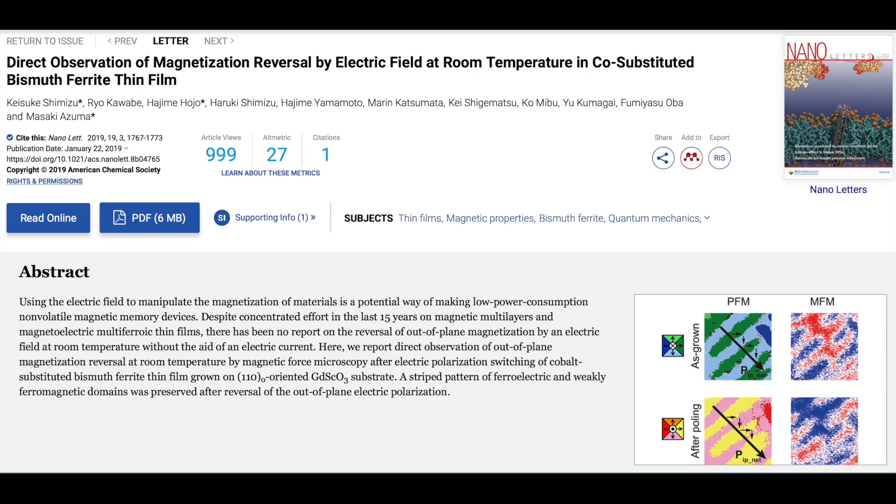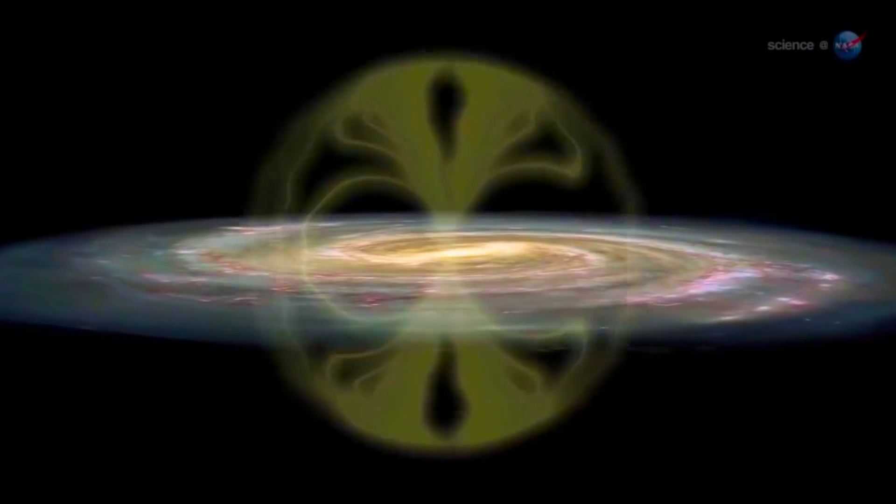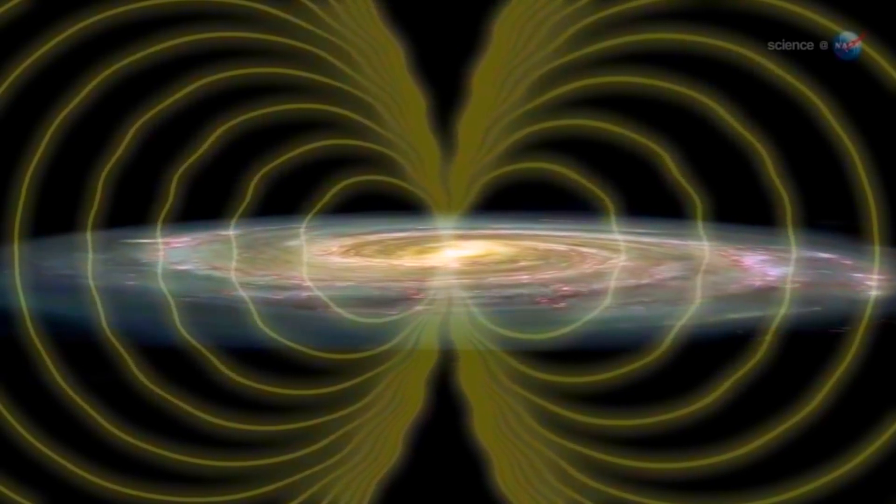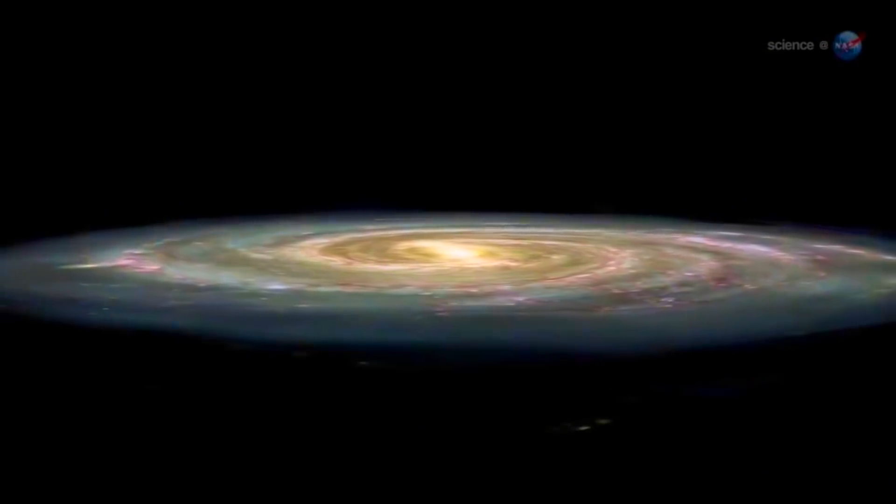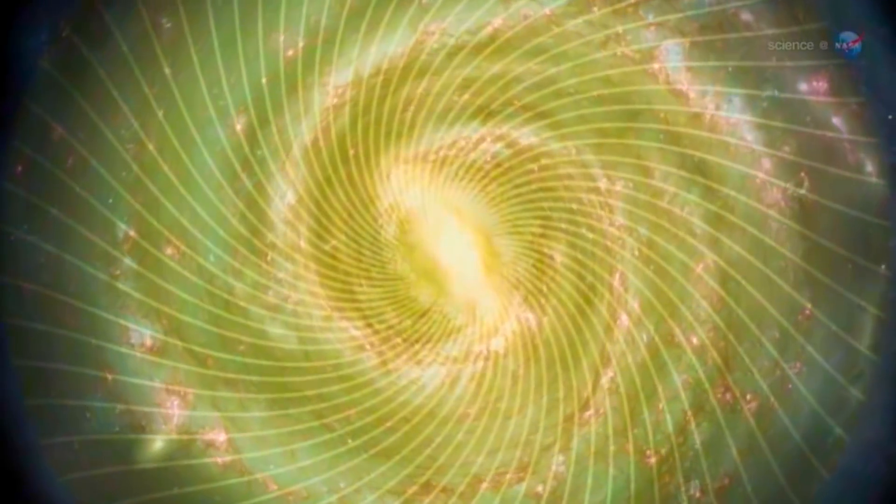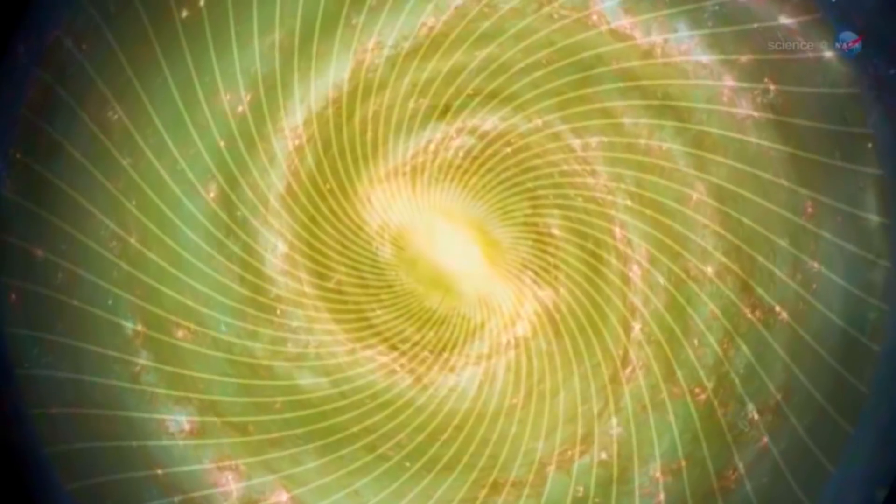Right now, the best working theory is that if this galactic current sheet exists, which the mainstream now even believes is part of the large-scale coherent galactic structure, then it will impact our solar system on a regular cycle, just like the Sun's current sheet hits Earth every two weeks.